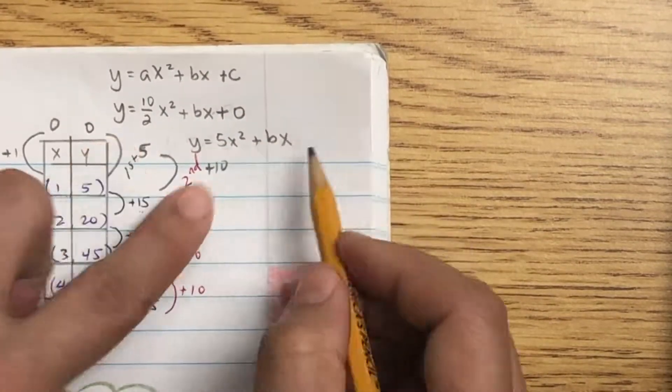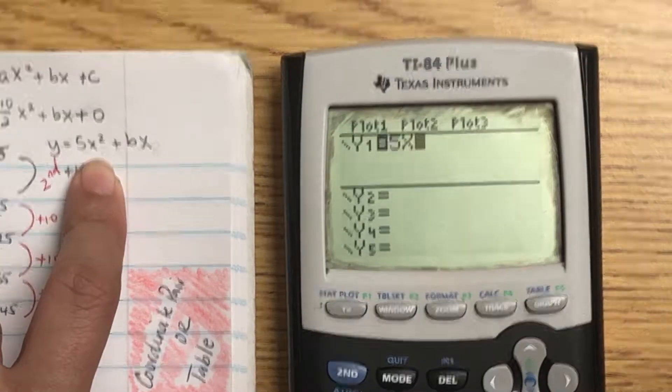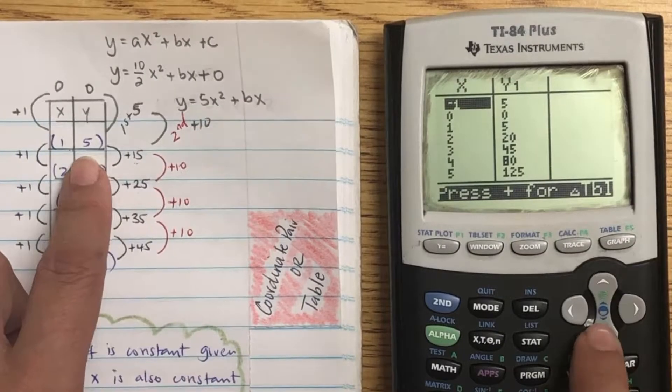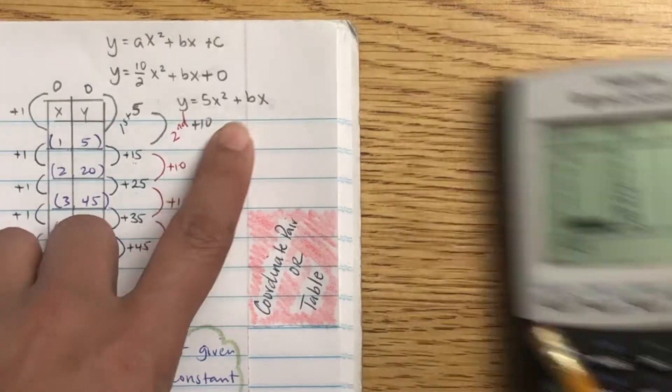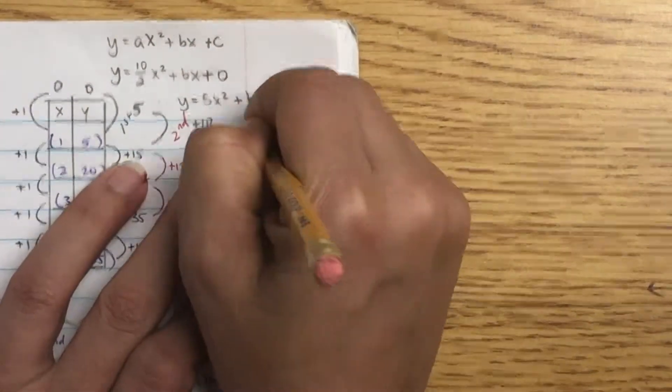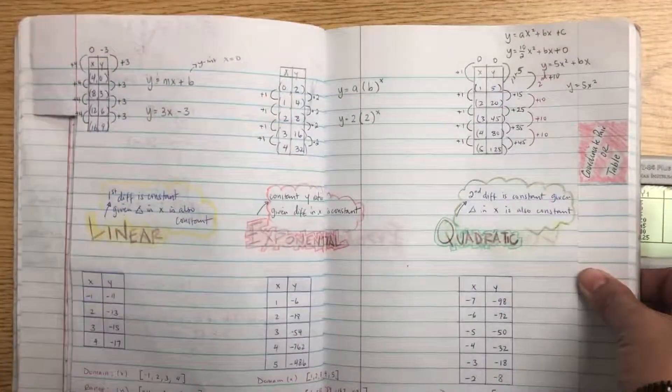So when I simplify that, 10 over 2 should give me 5x squared plus bx. Now I can find out what bx is, but before I do that, I'm just going to plug in y is 5x squared. Sometimes that b is 0. And you can see my equation is exactly the same as my table, and that means that the b is 0. So this is y equals 5x squared. Most of the time they won't ask you to find the b. That's pretty much it. So let's practice.